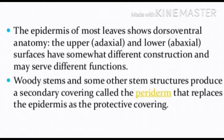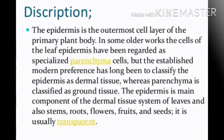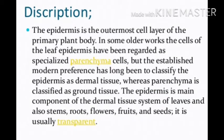Woody stems and some other stem structures produce a secondary covering called the periderm, which replaces the epidermis as the protective covering. Description: the epidermis is the outermost cell layer of the primary plant body. In some older works, cells of the leaf epidermis have been regarded as specialized parenchyma cells, but the established modern preference has long been to classify the epidermis as dermal tissue, whereas parenchyma is classified as ground tissue. The epidermis is the main component of the dermal tissue system of leaves, stems, roots, flowers, fruits and seeds. It is usually transparent.